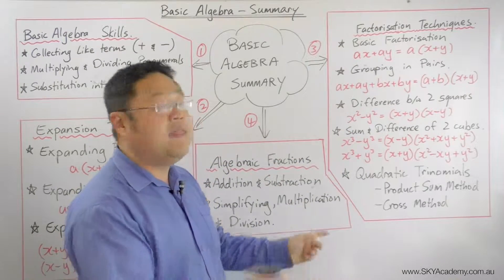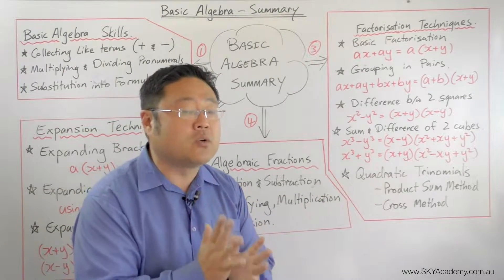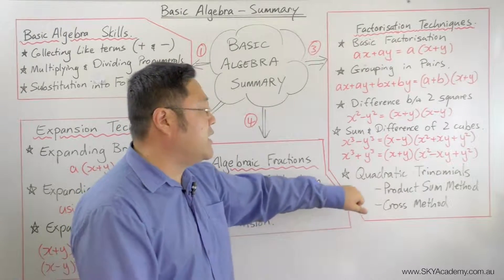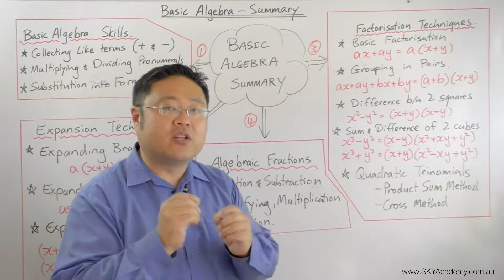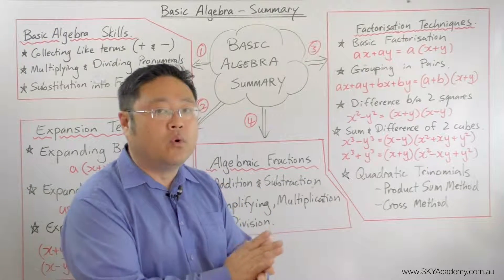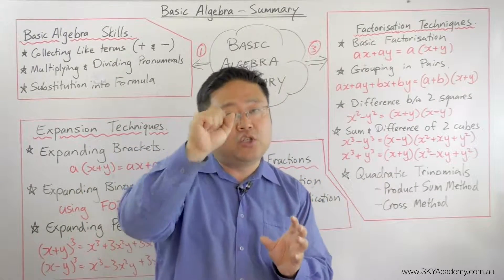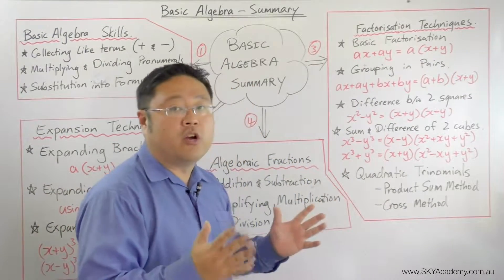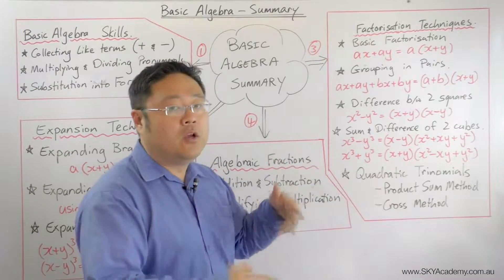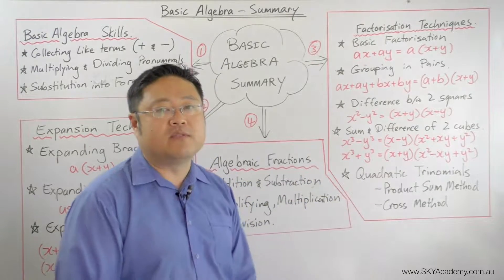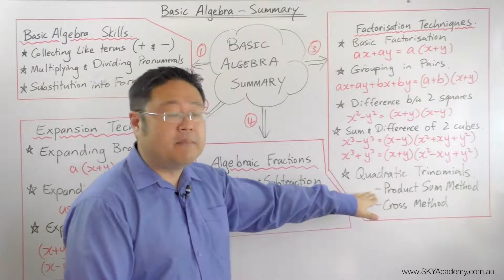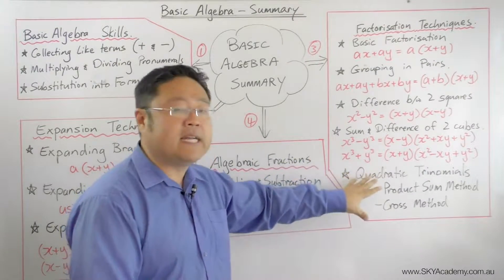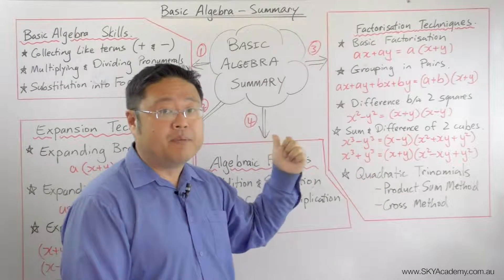We also introduced ourselves to factorizing quadratic trinomials, which we will look at more in a later chapter on quadratic equations or quadratic functions. A trinomial is of the form ax² + bx + c, where the highest power of x is 2. We learned how to factorize trinomials using two methods: the product-sum method and the cross method. If you want to refresh your memory, go back to that episode.